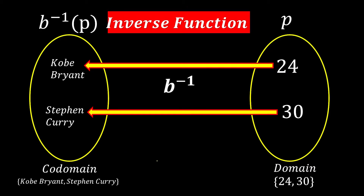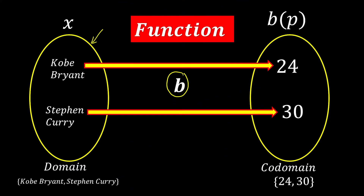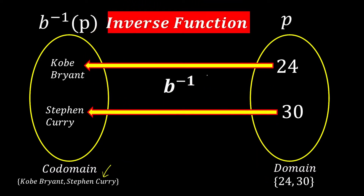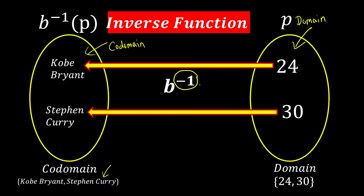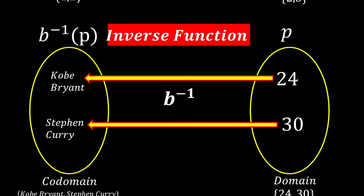One more thing to notice: the domain is no longer the names, but now the domain is the jersey numbers. So in the original function versus the inverse function, the domain and co-domain interchange. This makes sense because after inverting, we start from the other side. We use the power of negative 1 to represent the inverse function.